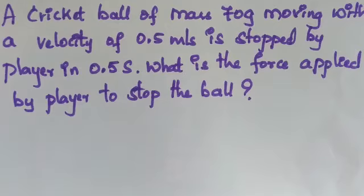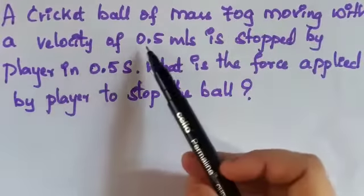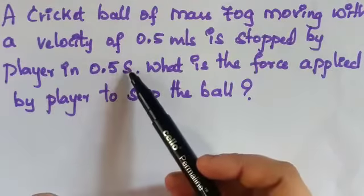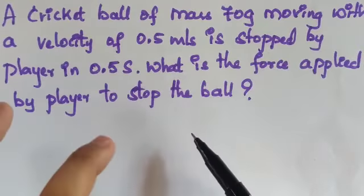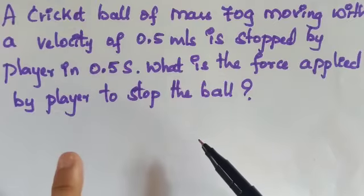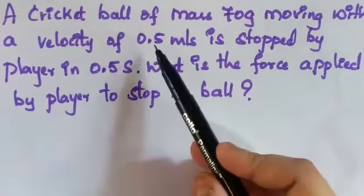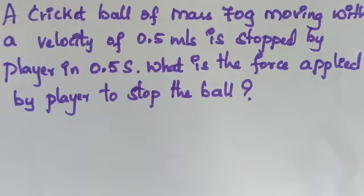The next question: a cricket ball of mass 70 gram moving with a velocity of 0.5 meter per second is stopped by a player in 0.5 seconds. What is the force applied by the player to stop the ball? This is an example of Newton's second law of motion — an object of some mass is moving and a player stops it.